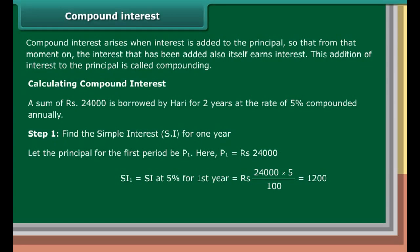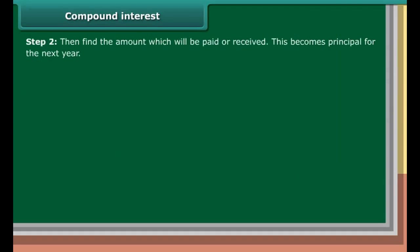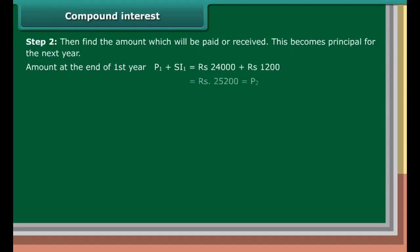Compound interest. Compound interest arises when interest is added to the principal so that from that moment on, the interest that has been added also itself earns interest. This addition of interest to the principal is called compounding. Example: A sum of rupees 24,000 is borrowed by Hari for 2 years at the rate of 5% compounded annually.